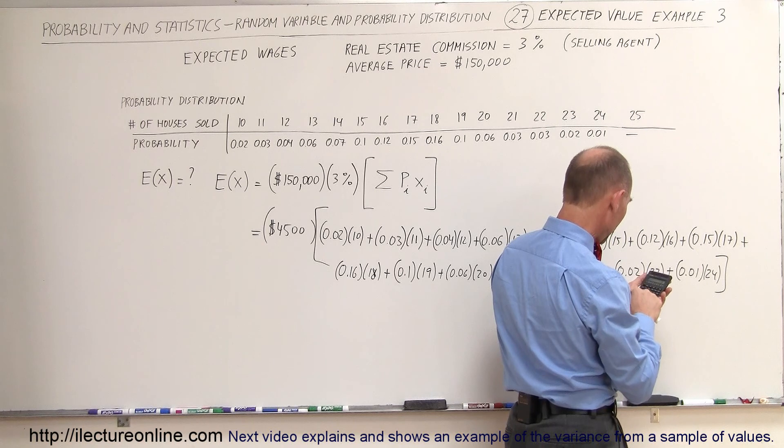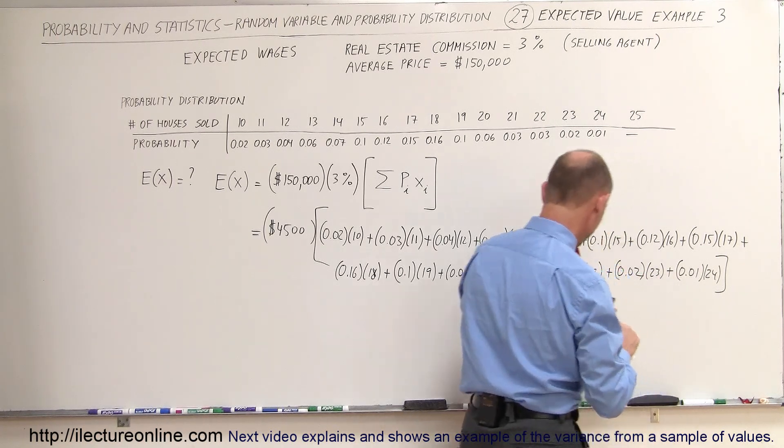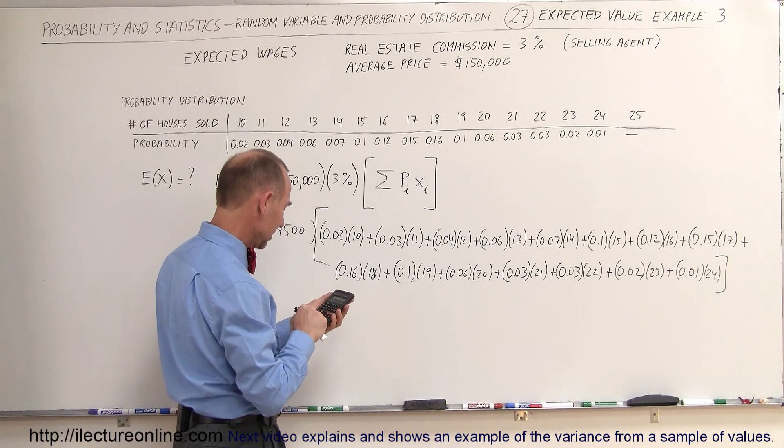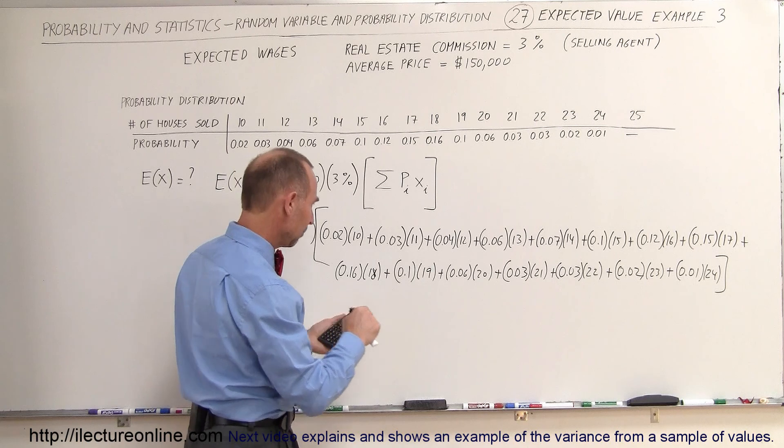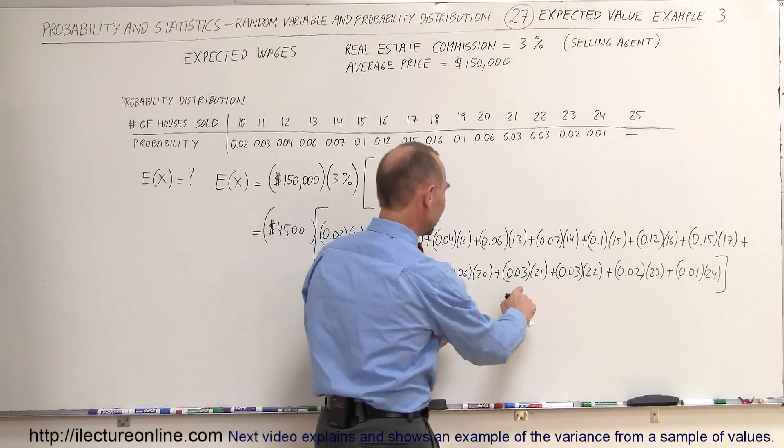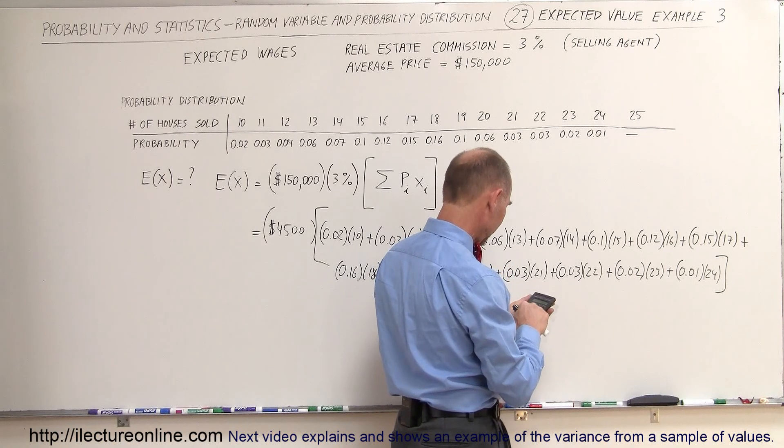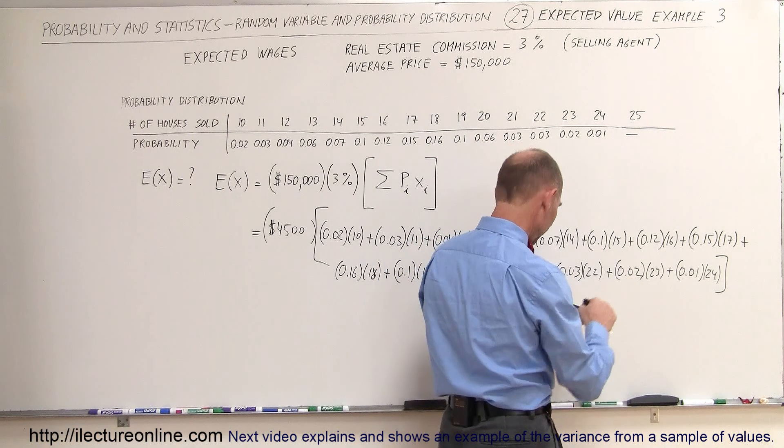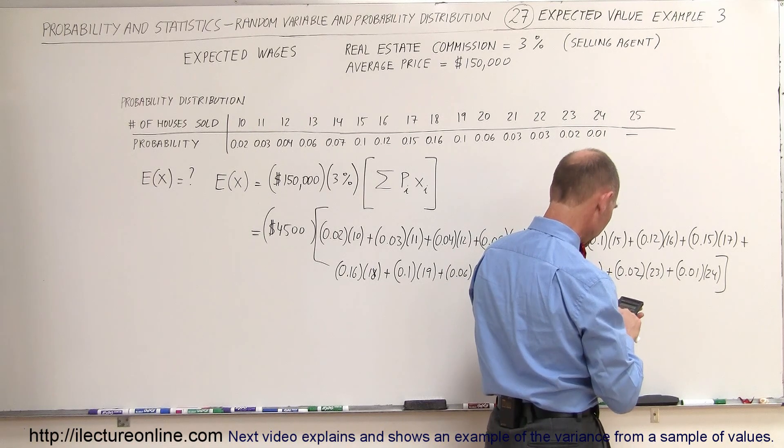that's 2.55 plus 0.16 times 18, plus 1.9 plus 1.2 plus 0.63 plus 0.66. And then here is plus 0.46. And then finally plus 0.23 plus 0.02 plus 0.24 equals.